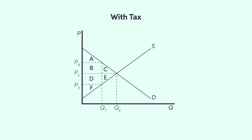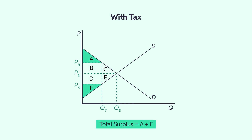When there is a tax of T dollars, the CS is given by the area A and PS is the area F. The total surplus TS, which equals CS plus PS, is equal to A plus F. The tax revenue then is equal to the area B plus T.